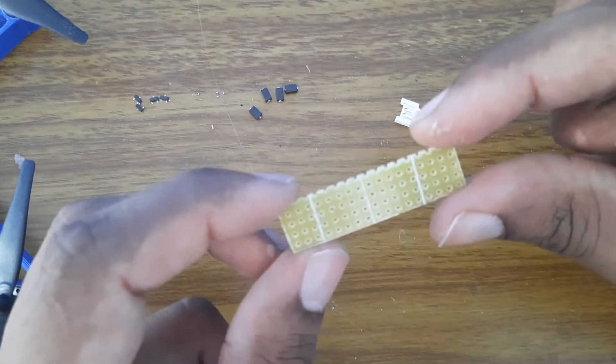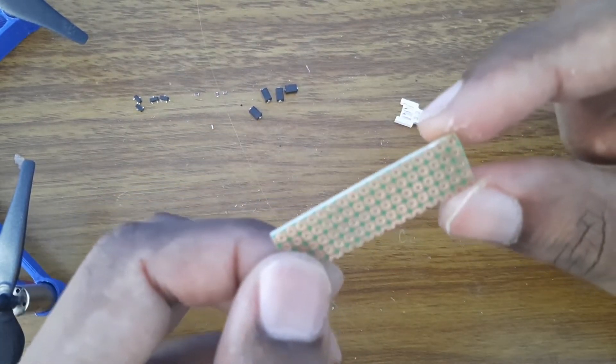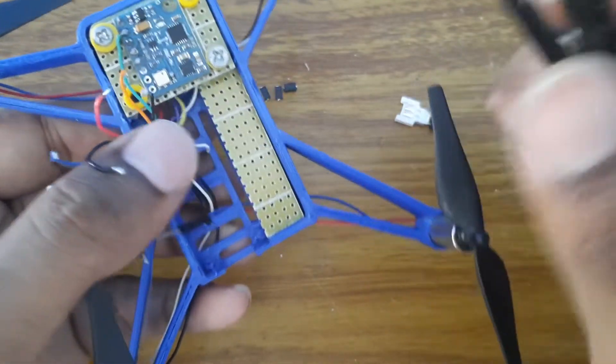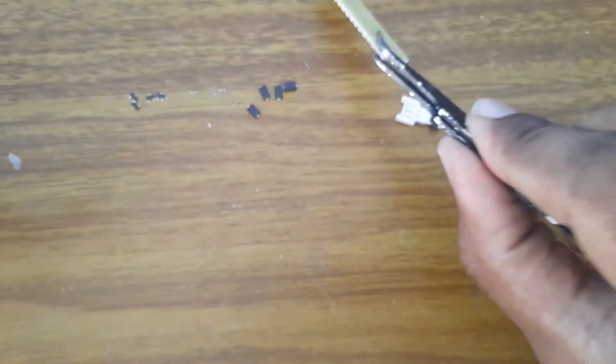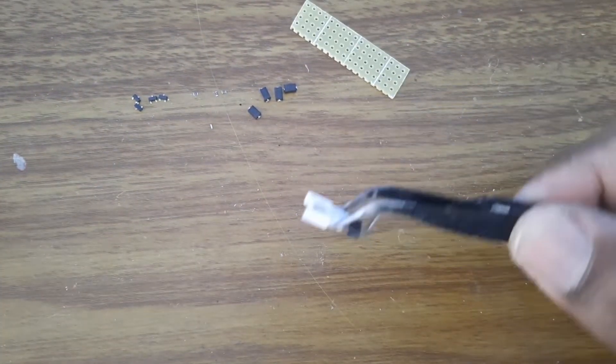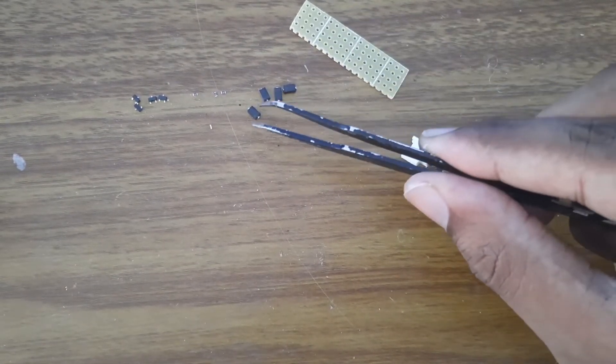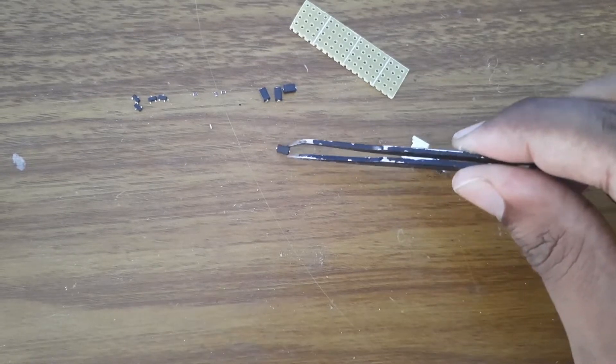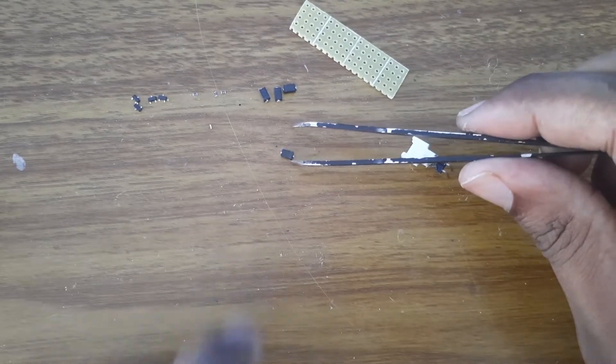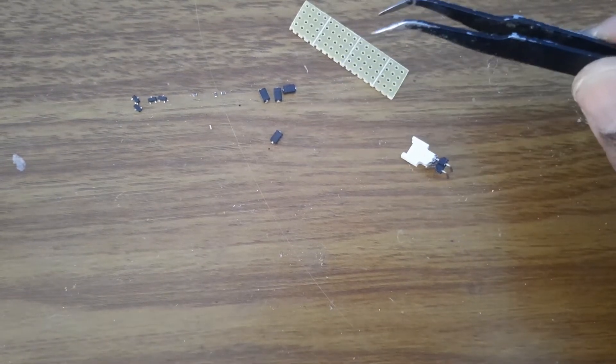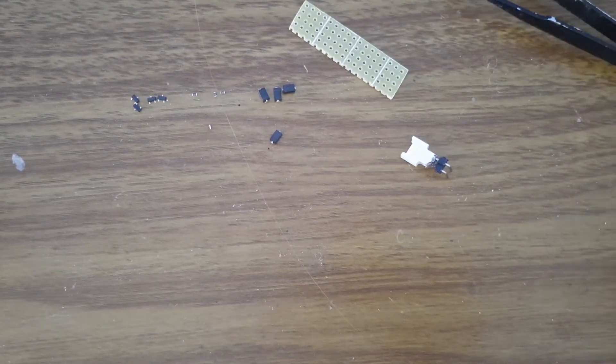Then you will also need the zero PCB, the prototyping PCB that will fit in this part right here. And then you will also need a connector to connect your battery. I will only do one to explain to you how to solder it and I will do the rest. Once I explain to you one, you will be able to do the rest yourself.